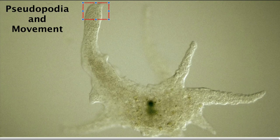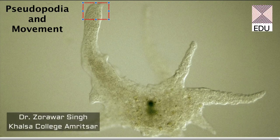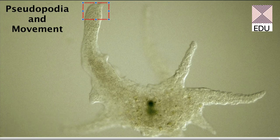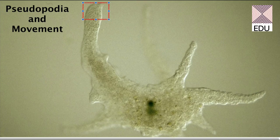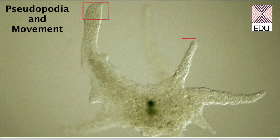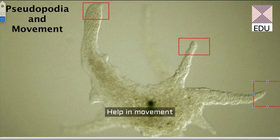Good morning students. In this particular lecture we'll be talking about the structure of pseudopodia and the movement in amoeba. We will start with the structure of pseudopodium. As the name suggests, pseudo means false, which is not a true structure. Pseudopodia refers to the false feet of amoeba. These are all the pseudopodia of amoeba, and they help in the movement of amoeba in water.